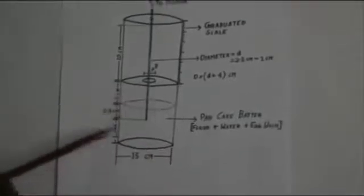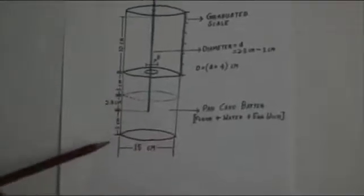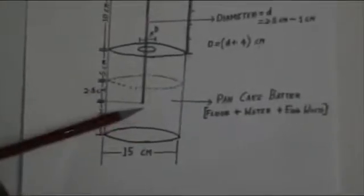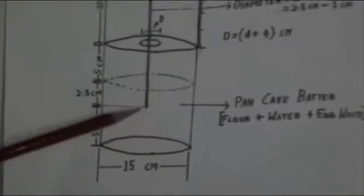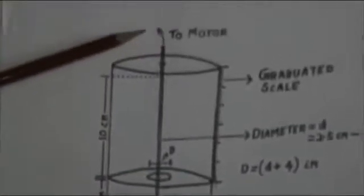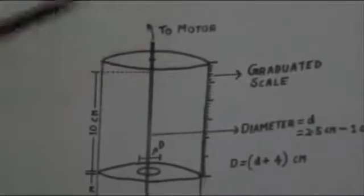Now the bottom cylinder contains a pancake batter solution up to 7.5 cm. And the rod is dipped into the batter up to 2.5 cm from the surface of the batter. The top portion of the rod is connected to a motor which rotates it.